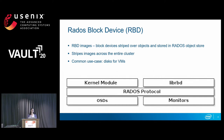Block devices are essentially a bunch of objects striped across the RADOS cluster. One of the most common use cases is they're used as disks in virtual machines. The kernel module is usually used in container or bare metal environments, while the user space library is more targeted towards QEMU, OpenStack, CloudStack, and similar environments.